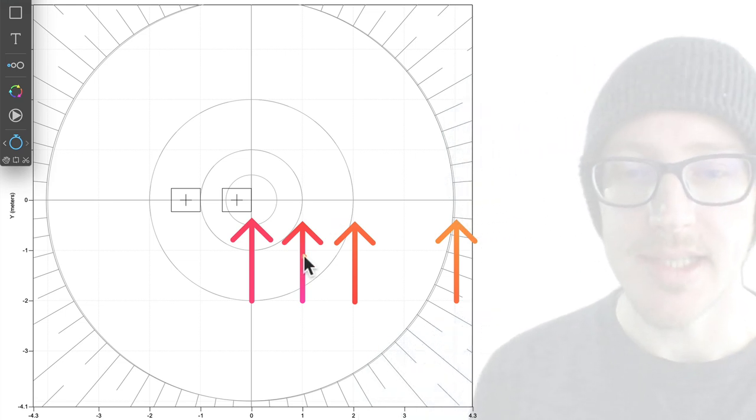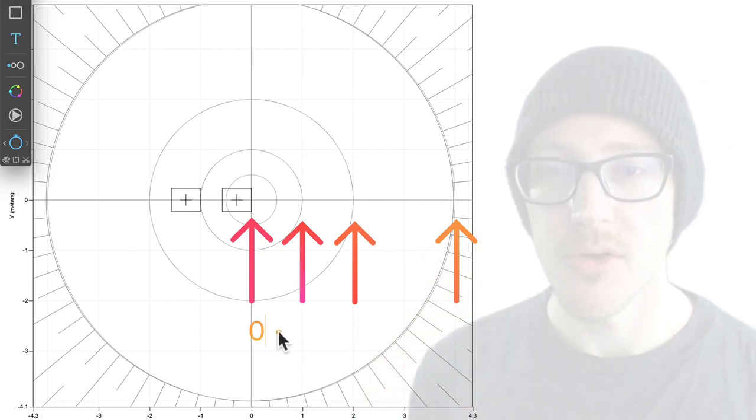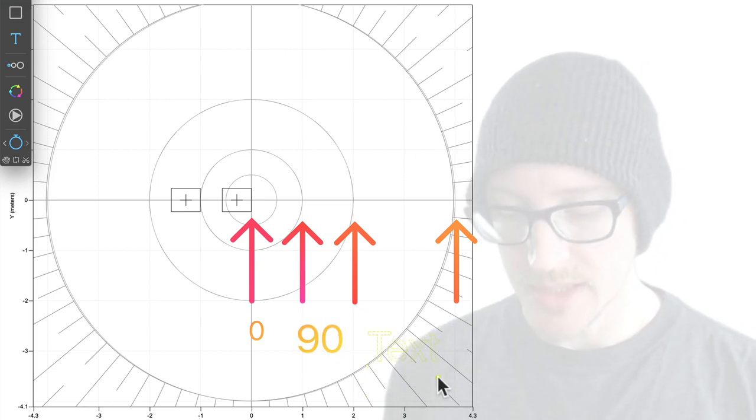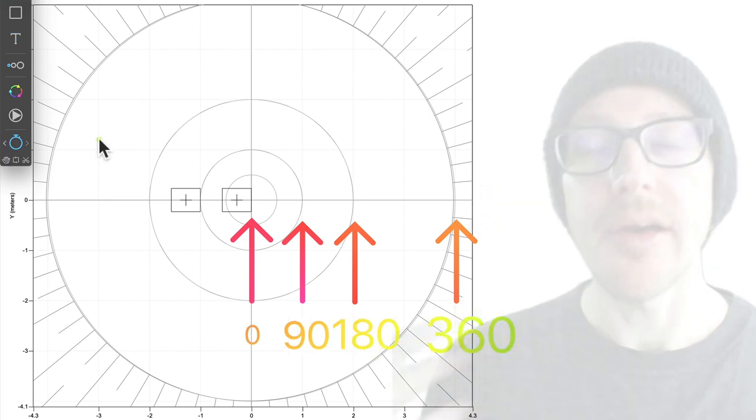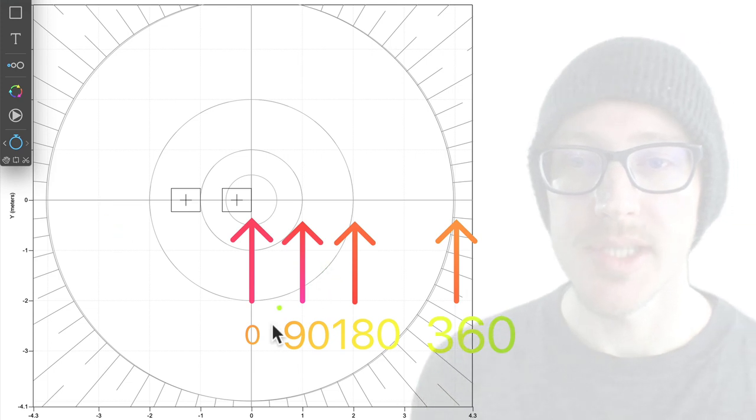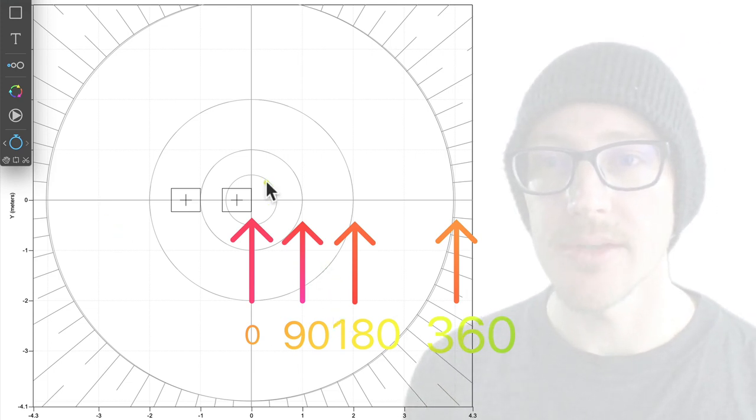And this will divide nicely also into the phase wheel. So if we think of 360 degrees of phase, then at zero meters we're at zero degrees. At one meter, we're at 90 degrees. At two meters, we're at 180 degrees. And at four meters, we're at 360 degrees.